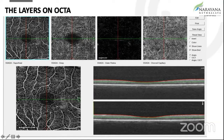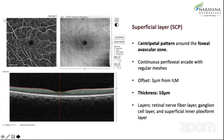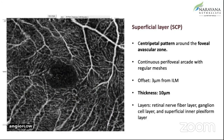Coming to the layers on the OCTA, since Zia has already covered it overall, I'll go a little bit deeper into each one of the different layers. Coming first to the superficial layer, it basically has a centripetal pattern around the FAZ. There is a continuous perifoveal arcade with regular meshes. The thickness is about 10 microns and the offset is 3 microns from the ILM. The layers you see here are the retinal nerve fiber layer, the ganglion cell layer, and the superficial inner plexiform layers, which is what is seen in the SCP.